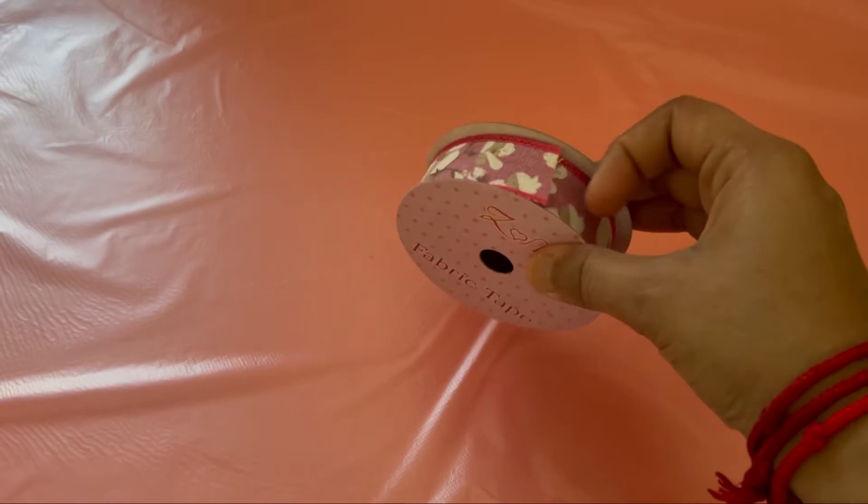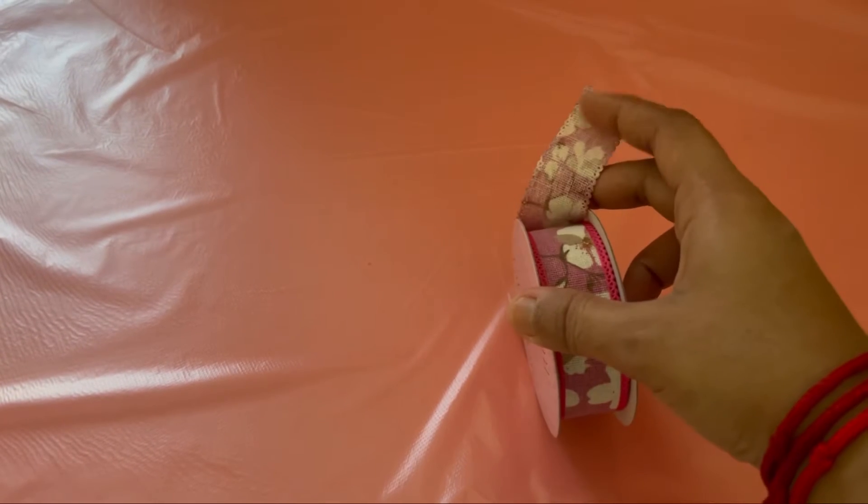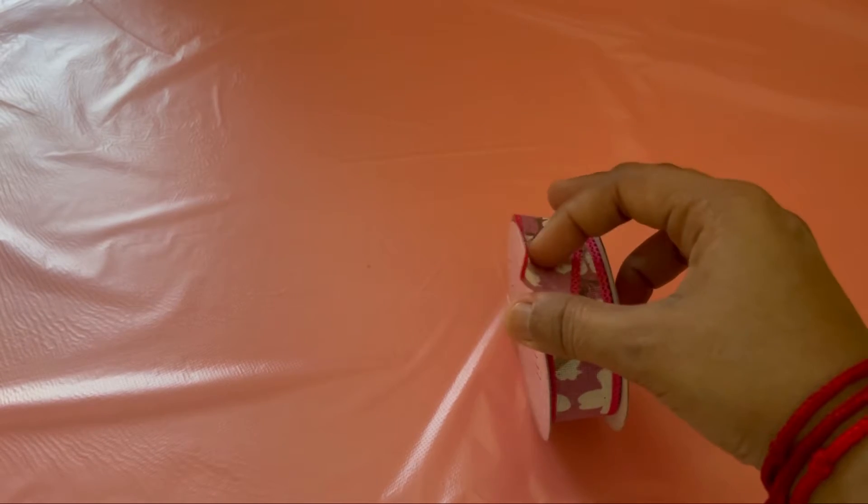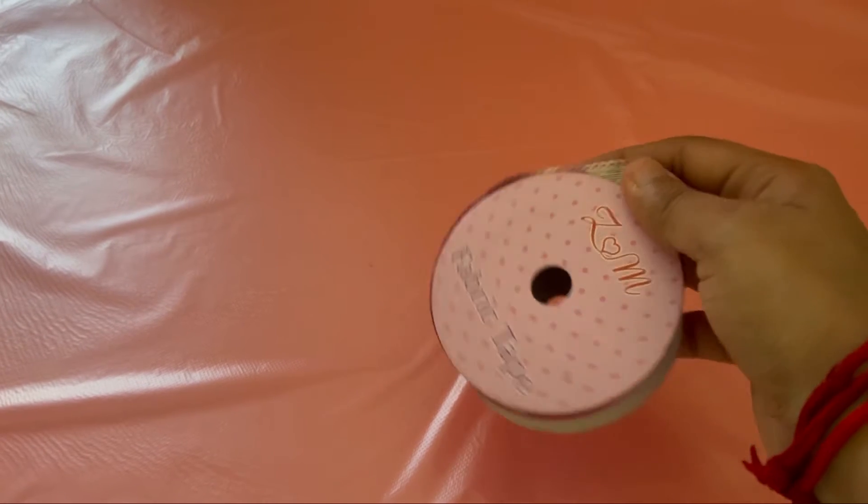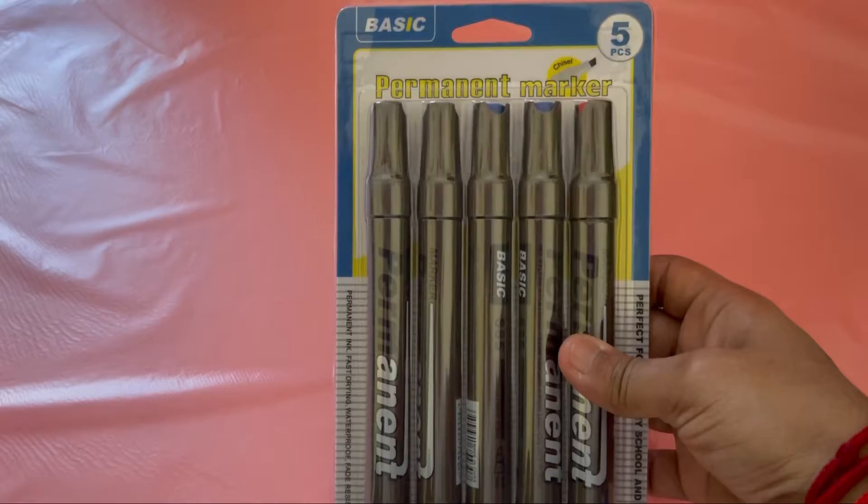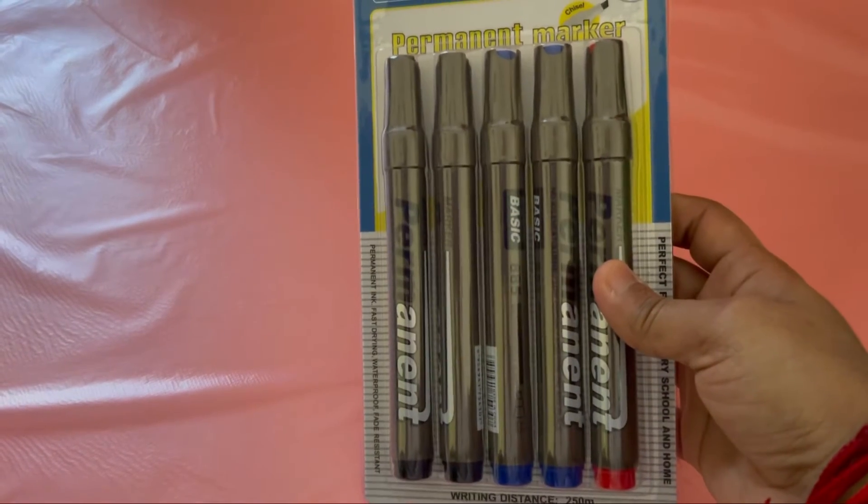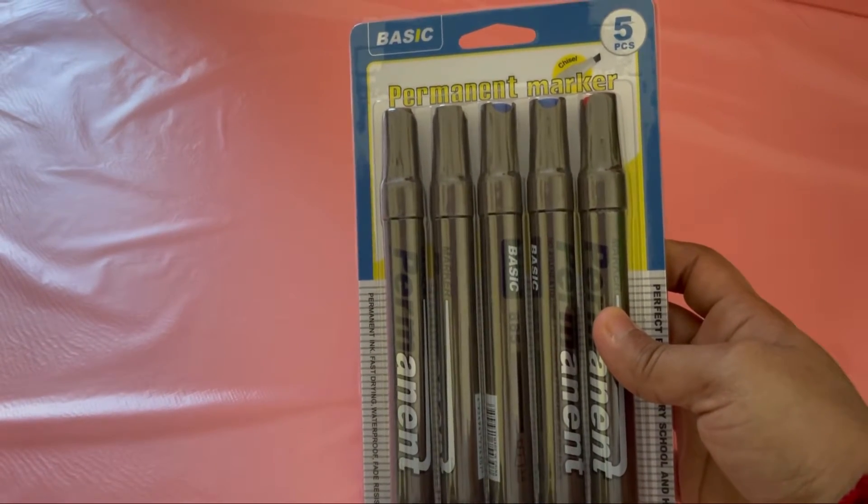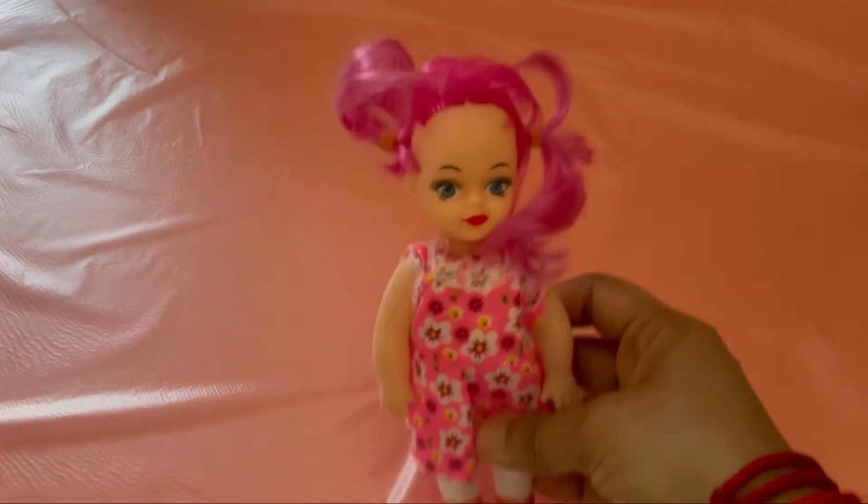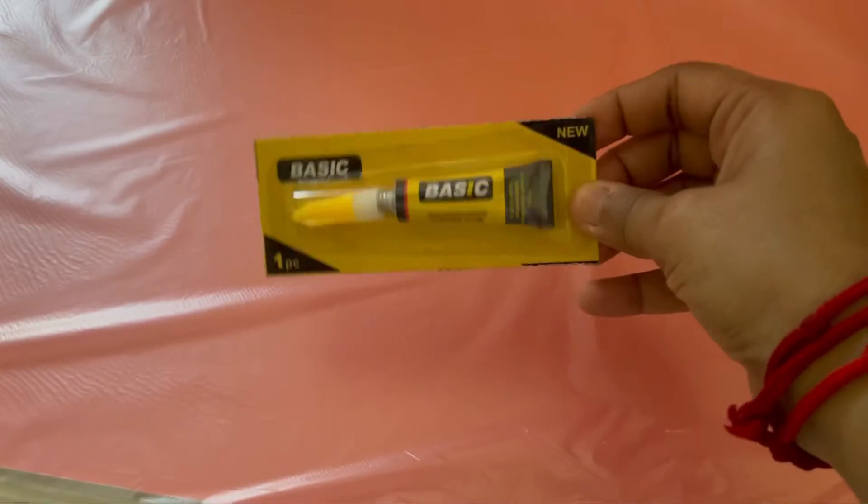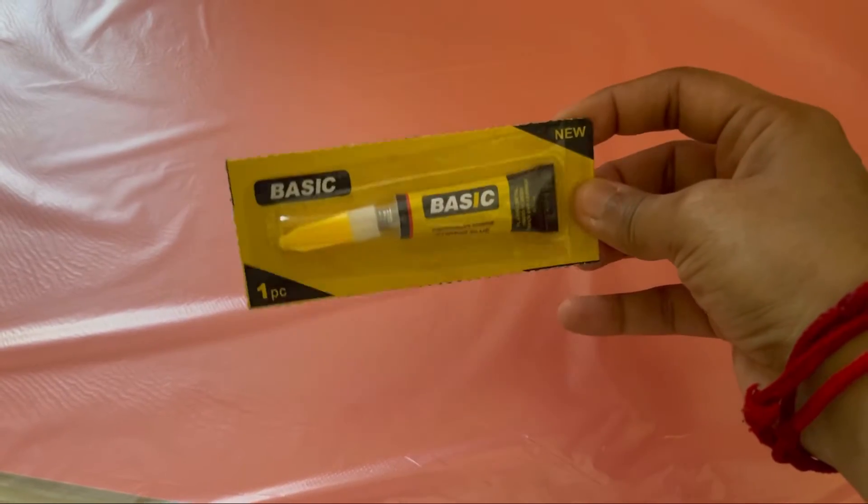Then you can take a fabric tape, the more designer ones which we have taken. Our child loves flowery stuff so we have taken that, followed by a couple of markers, followed by a plastic doll and some glue.